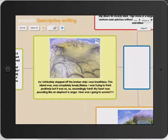So here I've got, she has made a very barren type land and it reads: As I intricately stepped off the broken ship I was breathless. This island was completely lonely, lifeless. I was trying to think positively, but it was so, so exceedingly hard. My heart was pounding like an elephant in anger. How was I going to survive?